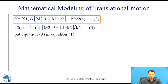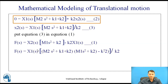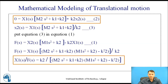Now, substituting equation 3 into equation 1 to find the transfer function. Dividing X₁(s) by F(s), we get: X₁(s)/F(s) = k₂ / [(m₂s² + k₂)·(m₁s² + k₂) + k₂ − k₂²]. This is the transfer function for the two-mass translational system.